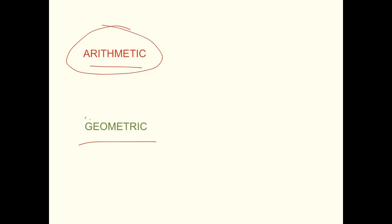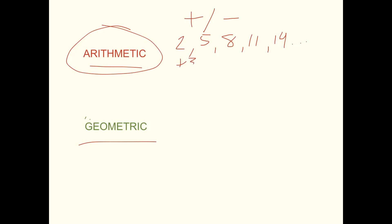So with arithmetic — arithmetic's fairly easy. It's when you add or subtract numbers in a sequence. So for instance you could start with two and then you can add three each time. So it would be two plus three is five, plus three is eight, plus three is eleven, plus three is fourteen, etc. You're just adding three each time, so therefore it's an arithmetic sequence.